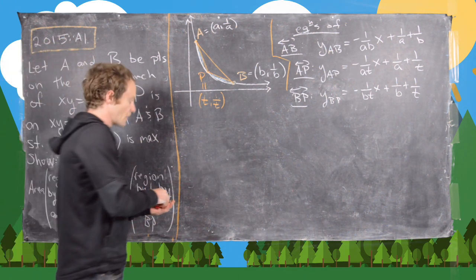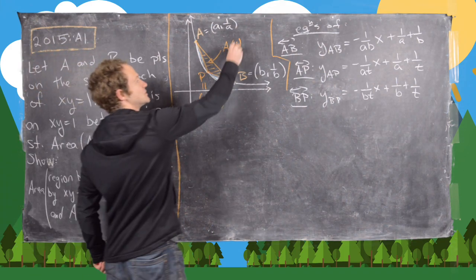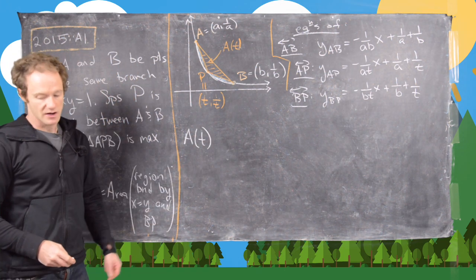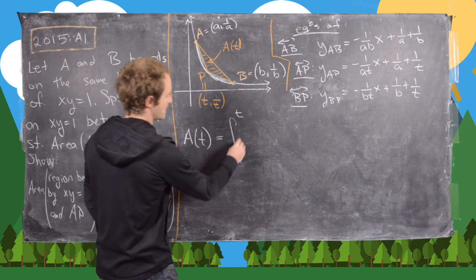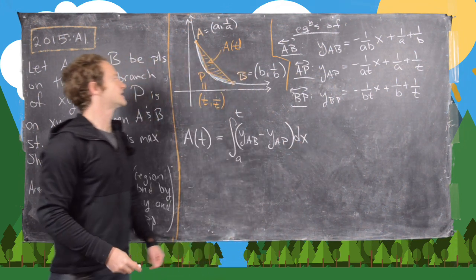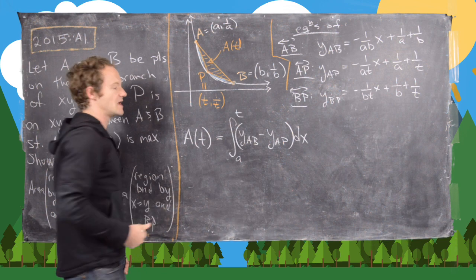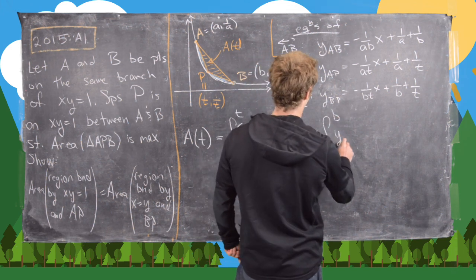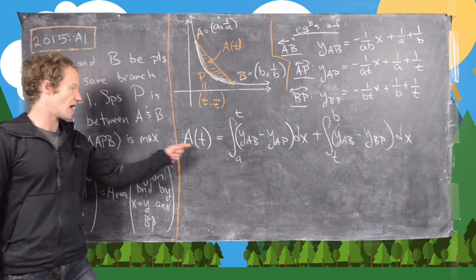Now we want to calculate the area of this triangle. Since the area depends on the value T which defines point P, I'll call it A(T), and that's what we want to maximize. The area of this triangle can be found as follows: it's the integral from A to T of (Y_AB − Y_AP) dx — since between X = A and X = T, line AB is on top and line AP is on the bottom — plus the integral from T to B of (Y_AB − Y_BP) dx.